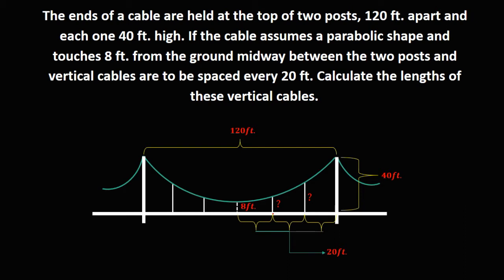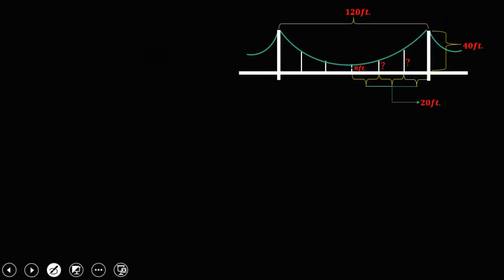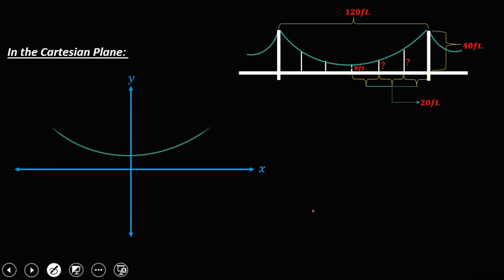To solve this problem, we place it in a Cartesian plane with X and Y axes. The parabolic cable connects the two posts, and the vertical cables are spaced every 20 feet. The height from the center is 8 feet and the posts are 40 feet tall. Key distances from center: 20 feet, 40 feet, and 60 feet. The unknowns are Y1 and Y2. The origin is at (0, 0).